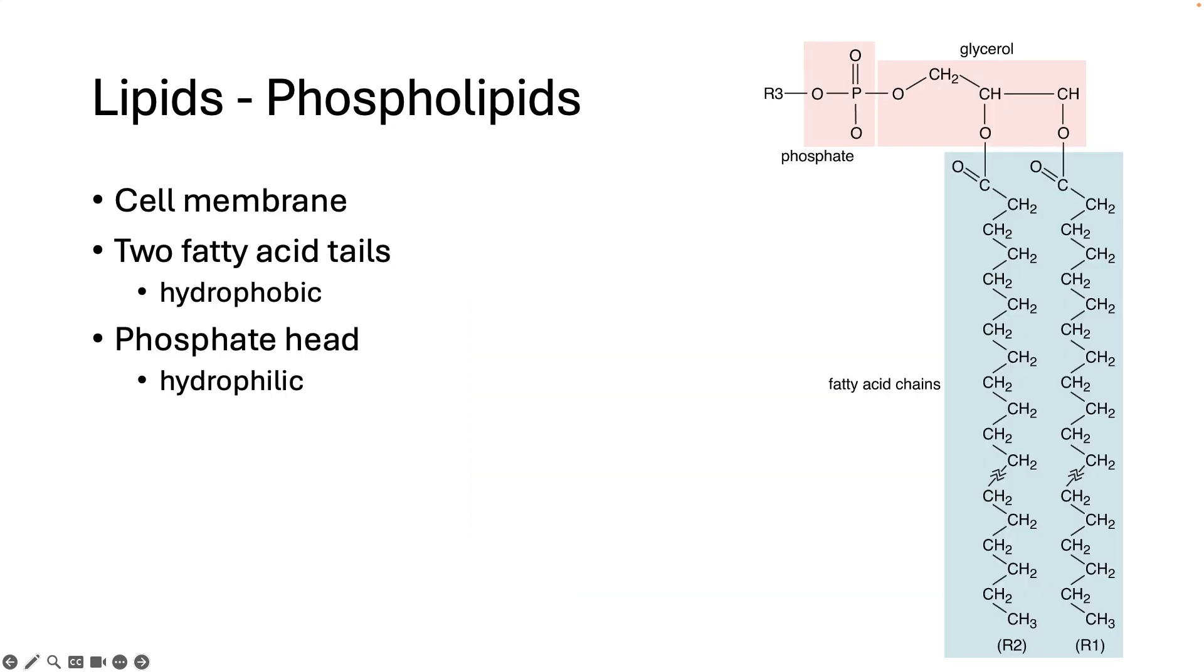Phospholipids are our second type of lipids. These make up the majority of what makes our cell membranes. These guys are a little bit different than triglycerides. They do have two fatty acid tails. They are just the same as the fatty acid tails from the triglycerides. There's just two of them instead of three.